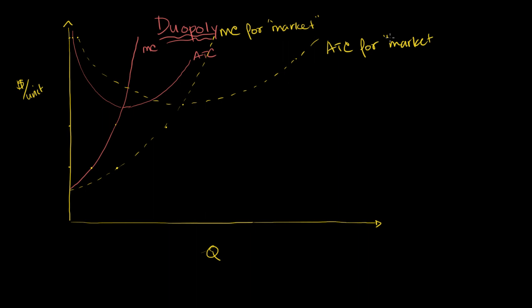So far the convention I've used is orange for an individual firm and dotted yellow for the market as a whole. Now let's think about what a good equilibrium price would be if the firms were able to coordinate — if they were to essentially combine and behave like a monopoly. To think about that, we need to draw a market demand curve, which looks something like this.